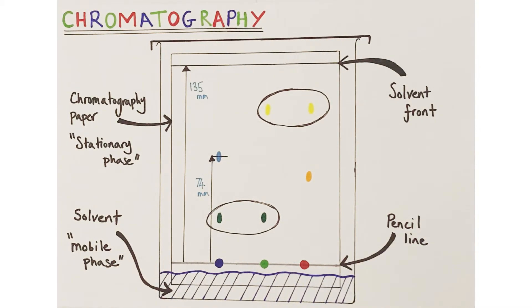You then use your pencil and ruler to measure from the bottom pencil line all the way up to the pencil line drawn for the solvent front, i.e., the maximum distance traveled by the solvent, and again you record that distance in millimeters. For this example, it was 135 millimeters.